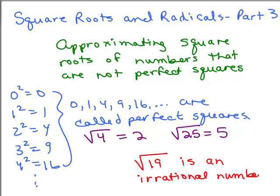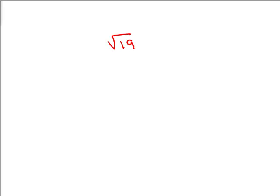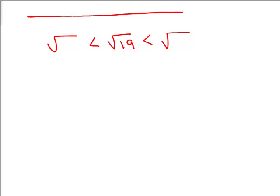But we can estimate approximately where it is. We're going to look at the square root of 19 and think of it this way: we're going to try to figure out approximately what two numbers it's in between. You might think about where it would be on the number line. We're going to try to think of the perfect square just before 19 and the perfect square right after 19.